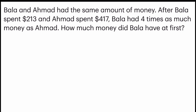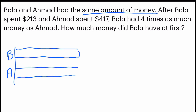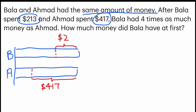Bala and Ahmad had the same amount of money. After Bala spent $213 and Ahmad spent more — which is $417 — I'm going to chop off a bit more for Ahmad, which is $417 here, and $213 for Bala. Now they say Bala had four units, so this portion is equal to four units, and Ahmad would have one unit.